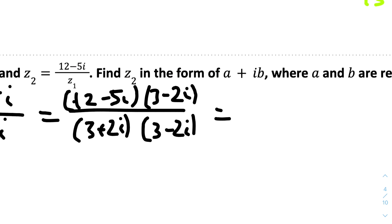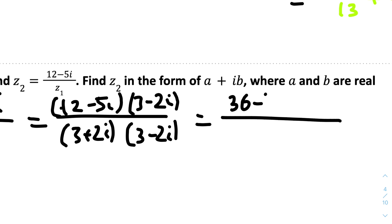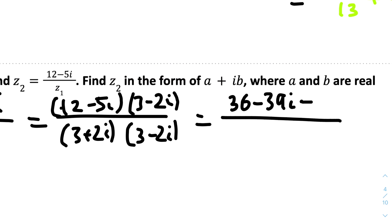Expanding the numerator: 12 × 3 = 36. The imaginary terms: 12 × (-2i) = -24i, and -5i × 3 = -15i, so combining gives -39i. The last term is -5i × (-2i): (-5) × (-2) = 10, and i × i = -1, so 10 × (-1) = -10. The real part of the numerator is therefore 36 - 10 = 26.